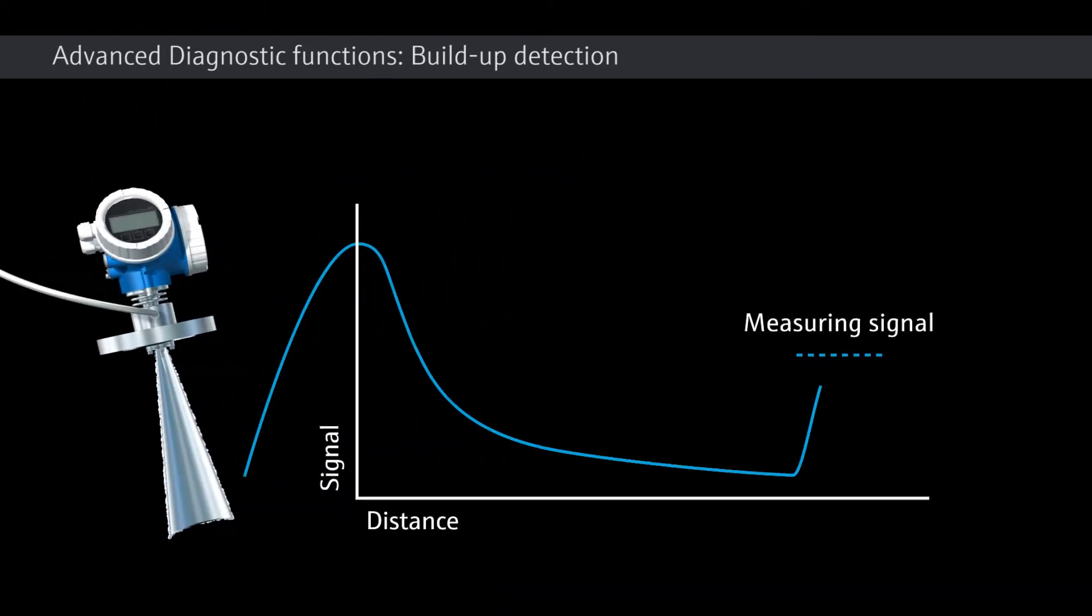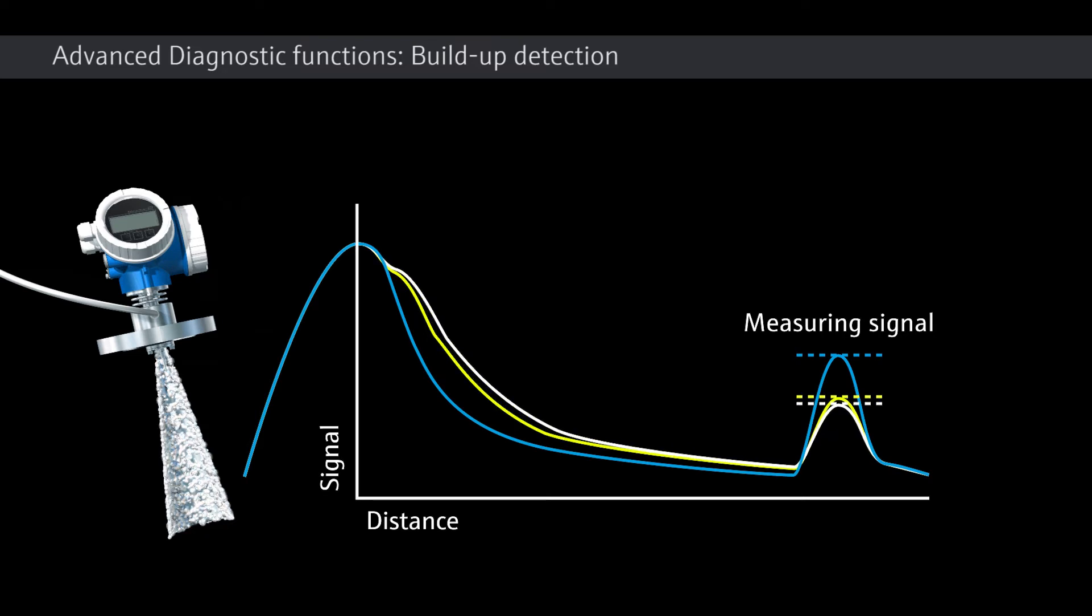The new advanced diagnostic functions of Micropilot easily monitor process and instrument data. The example shows that the signal intensity attenuates as the buildup increases. If the signal intensity becomes too low, reliable measurement is not possible anymore. Only cleaning of the antenna can restore reliable measuring capability.